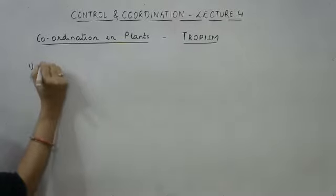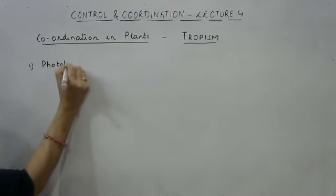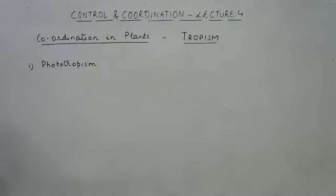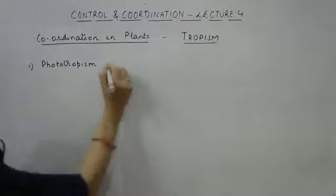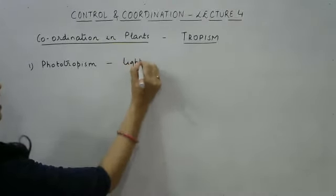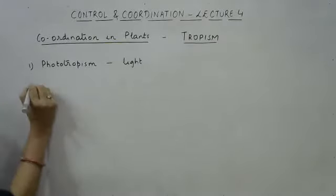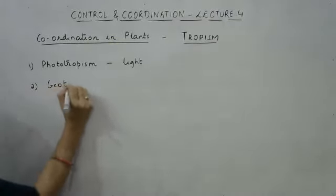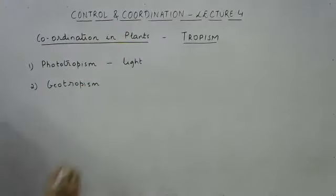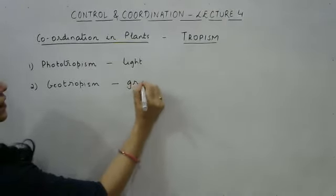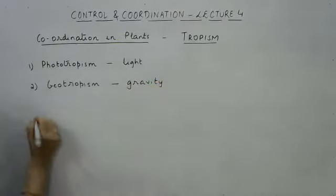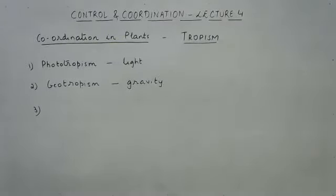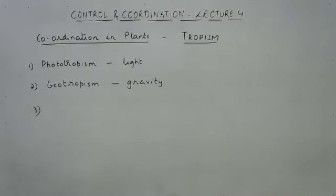The various types of tropic movements are: first is phototropism. As the name suggests, phototropism means response to light as a stimulus — so in the case of phototropism, the stimulus is light. The second is geotropism, and here the stimulus is gravity. All these changes can be observed in plants if we try to be a little more vigilant. The third type of tropism is hydrotropism.